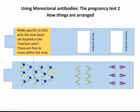Here we have the monoclonal antibodies against HCG with the little blue beads — they are free to move within the strip through the absorbent material underneath. In the results window, we have monoclonal antibodies that are also specific for HCG, but these are the immobilised ones, stuck down on the surface. Then in the control window, we have the anti-monoclonal antibody antibodies.